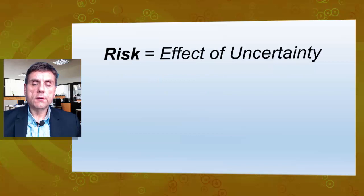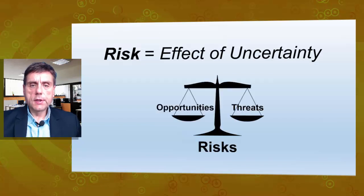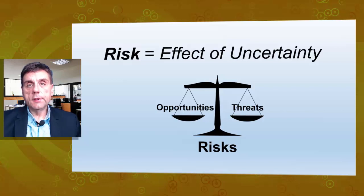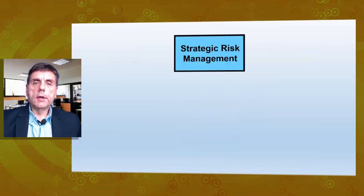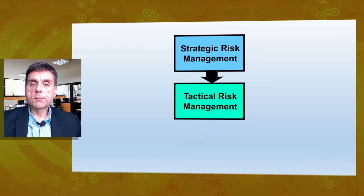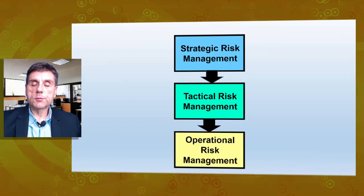Risk is the effect of uncertainty, and it implies uncertainty in both positive and negative aspects. This means we should assess opportunities as the positive aspect of risk and threats as the negative aspect of risk. There are also three different levels on which organizations should consider potential risks: strategic risk management, tactical risk management, and operational risk management.